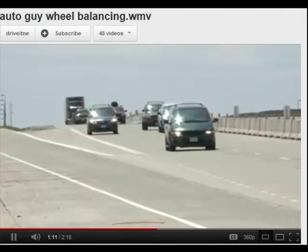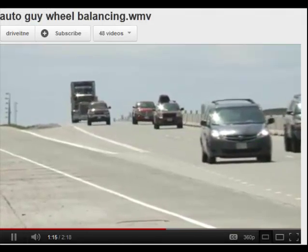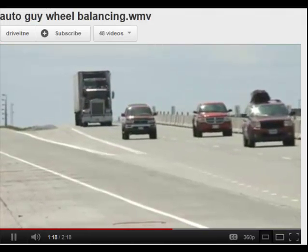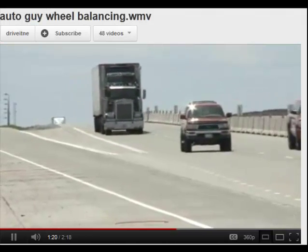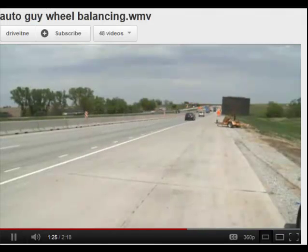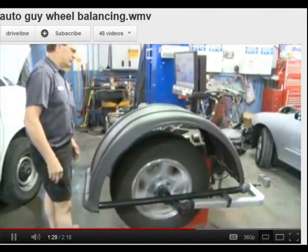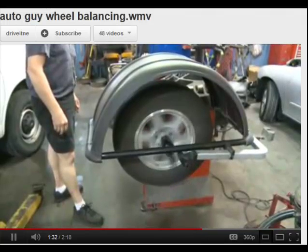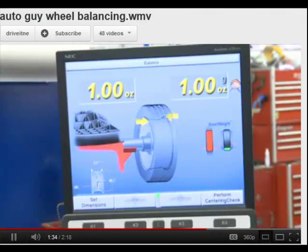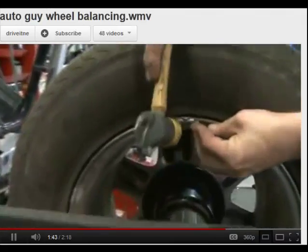Here's why tires need to be balanced. Whenever an object spins around in a circle, it will have a tendency to wobble if one side is heavier than the other, kind of like a ceiling fan. Same holds true for a tire. The weight of the tire and wheel must be evenly distributed to keep it from wobbling at higher speeds. When a tire is balanced, it's put on a machine such as this which spins it up to speed. Then sensors in the machine take readings as the tire spins and gives the technician a readout of how much weight the wheel needs in order to be balanced. Even as little as a quarter of an ounce of weight can make a big difference.